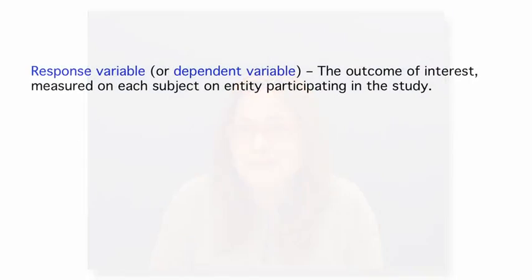Or say a new teaching method results in better learning outcomes — can I definitely attribute the improvement to the new method? We'll start by introducing some of the vocabulary used in experiments. The outcome, or response variable, is the variable that we are interested in, measured on each of the individuals or entities participating in the study.